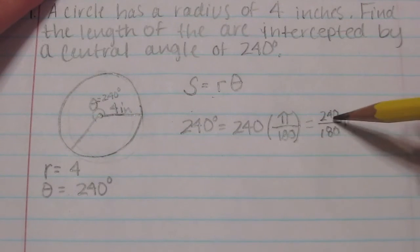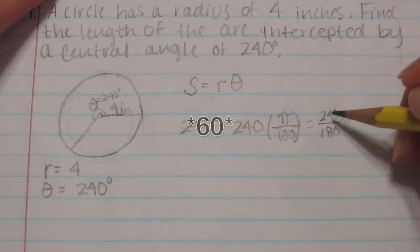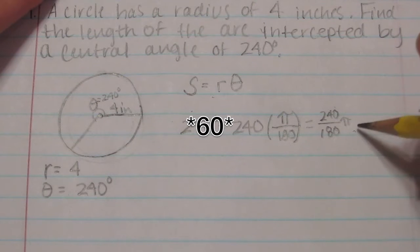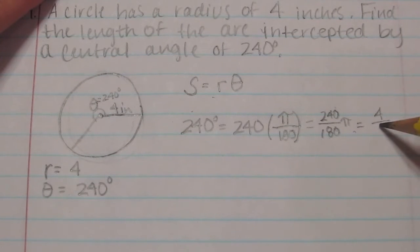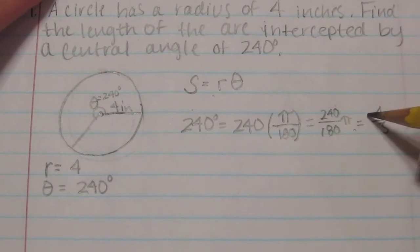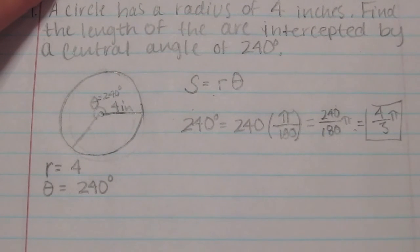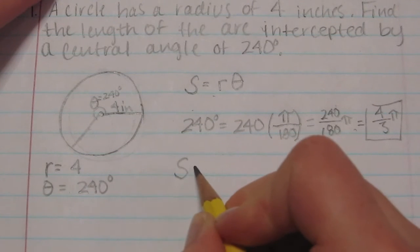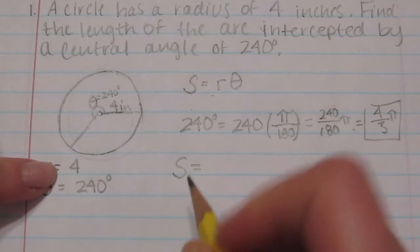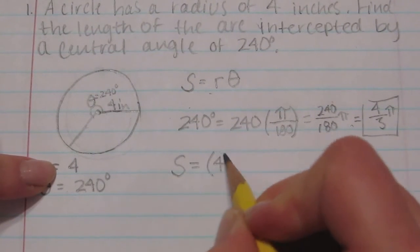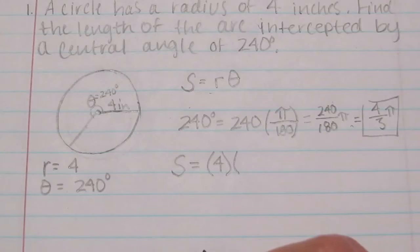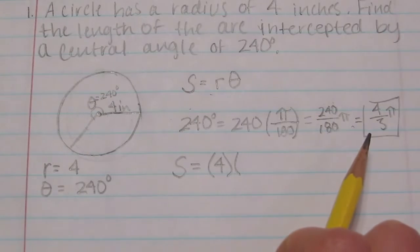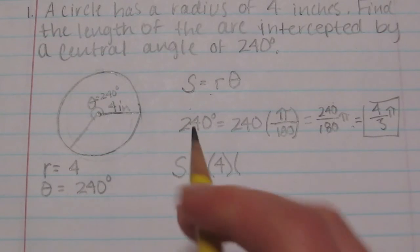And you can see that this will simplify because 6 goes into both of those. So that is really 4 over 3 pi and that is radians or in this case theta. So s is going to equal the radius 4 multiplied by theta which we now know is 4 pi over 3 radians.